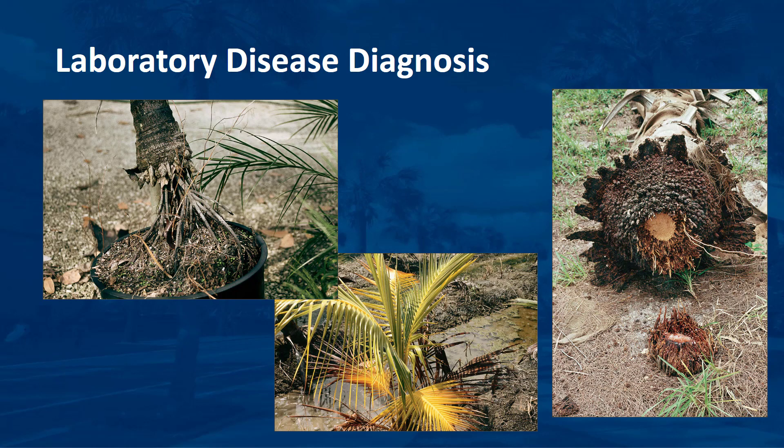One common error in diagnosing palm problems is to sample roots. In the landscape and field nursery, root rots of palms are uncommon and are usually the secondary result of a palm being planted incorrectly or in the wrong environment. Examples include planting a date palm in soils that are routinely waterlogged or planting any palm too deep. A diagnostic laboratory will usually be able to isolate potentially pathogenic fungi from roots, but these fungi are seldom the primary cause of the problem observed.